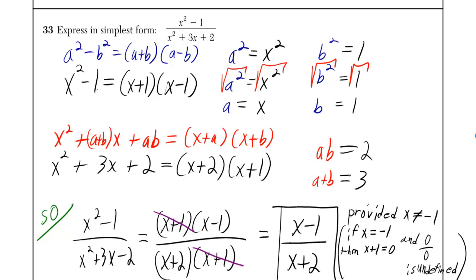Yo, what up? We gotta factor x squared minus 1. It's going to be x plus 1 times x minus 1. How did I get that? I used the a squared minus b squared formula, which is a plus b times a minus b.